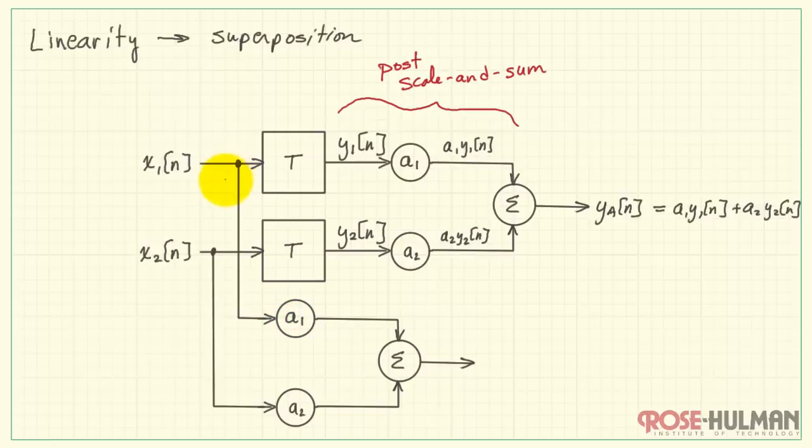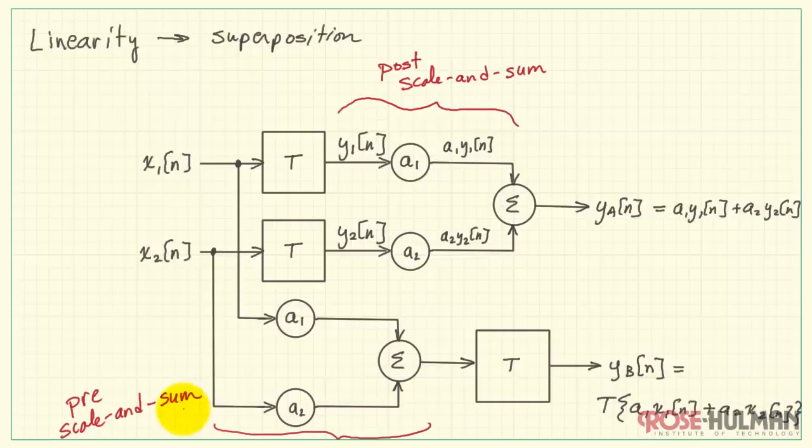I'm taking the same scale and sum but now applying this on the inputs first. Then I'll pass that through a single instance of our system T. This will form the output yb of n. Now here we have T operating on the scaled and summed versions of x1 and x2. Therefore we can think of this version as the pre-scale and sum.